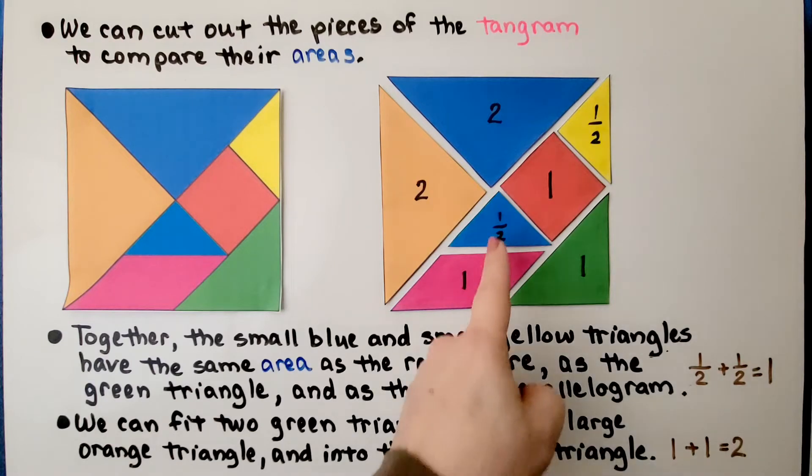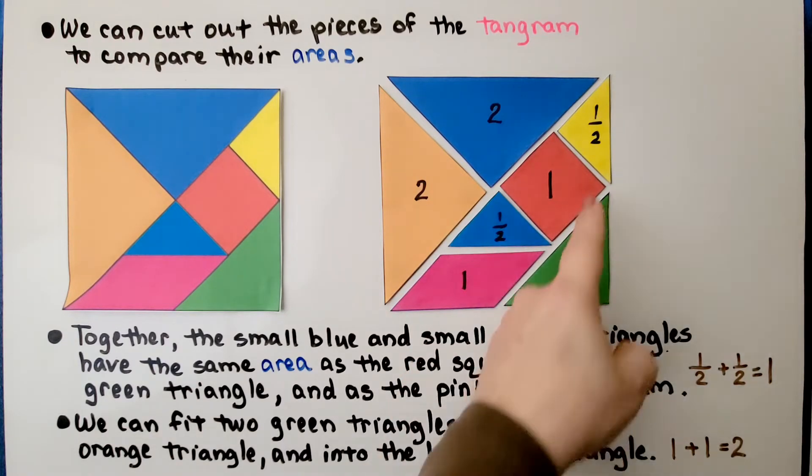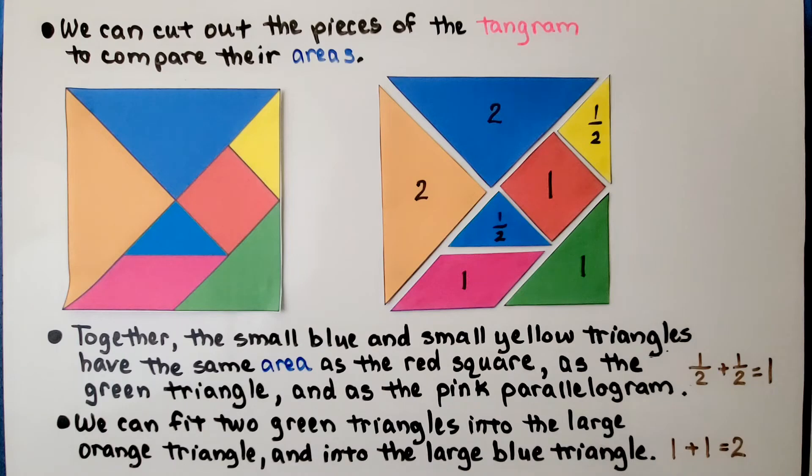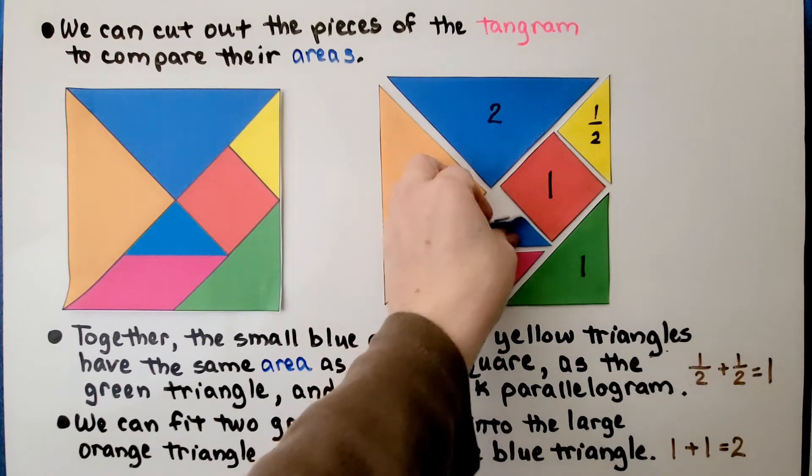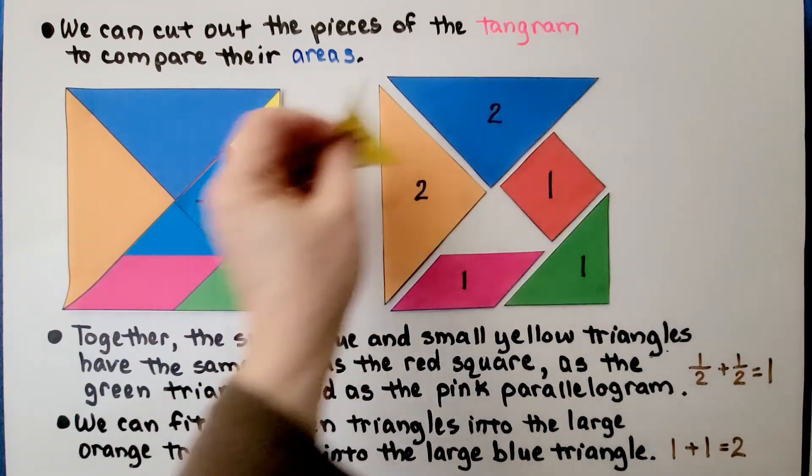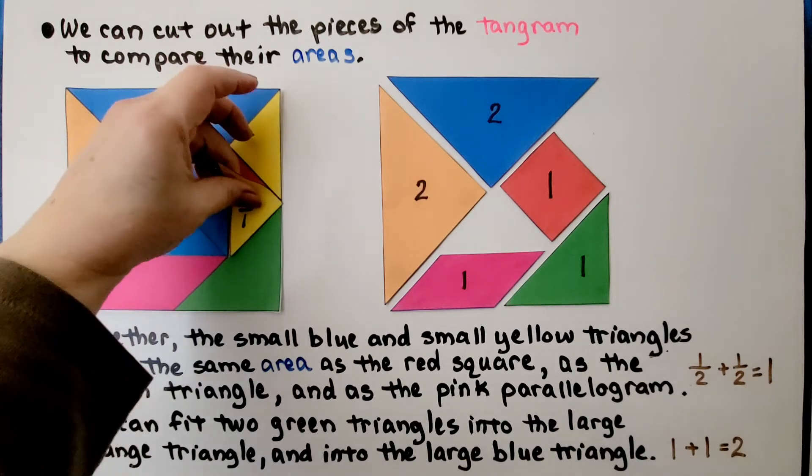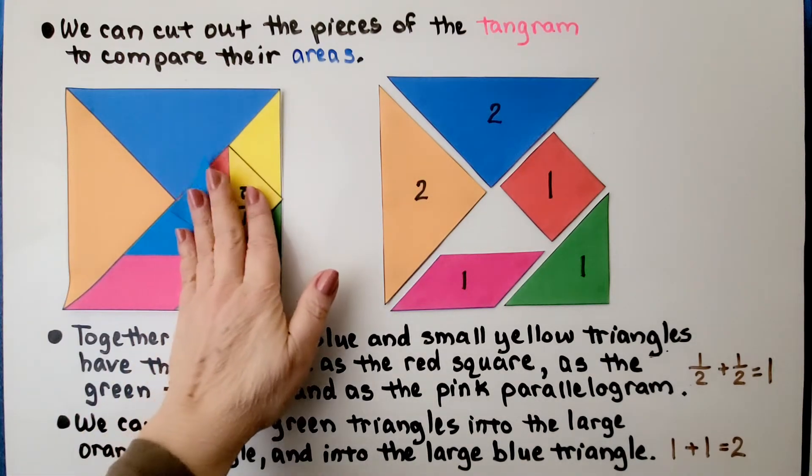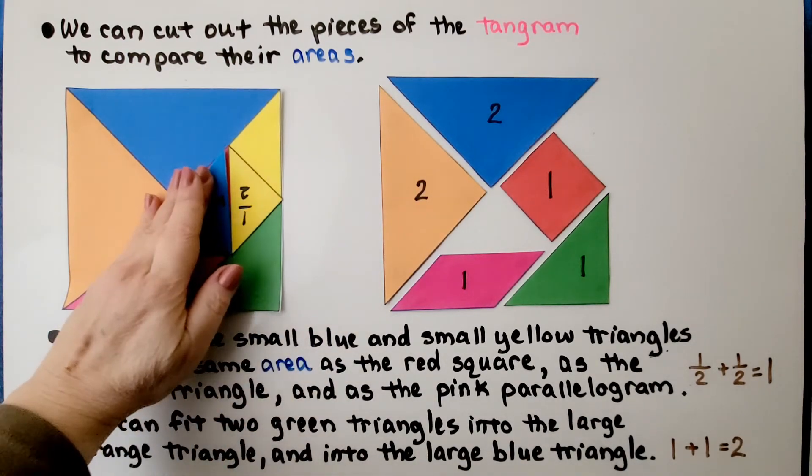Together, the small blue and the small yellow triangles have the same area as the red square. We can take this blue and this yellow one and lay them on top of the red square and see that we have one half and one half.